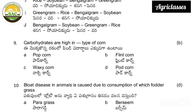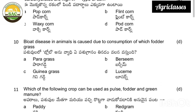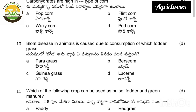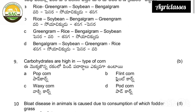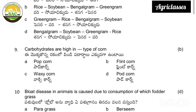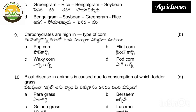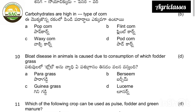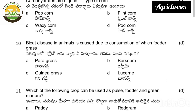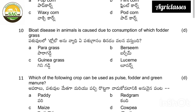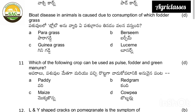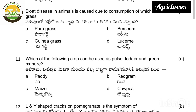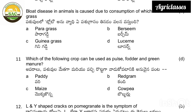Which of the following crop can be used as a pulse, fodder, and green manure? Options: paddy, red gram, maize, kaupi. Kaupi is used as a pulse crop, as a fodder crop, and as a green manure crop. It is a very important crop.